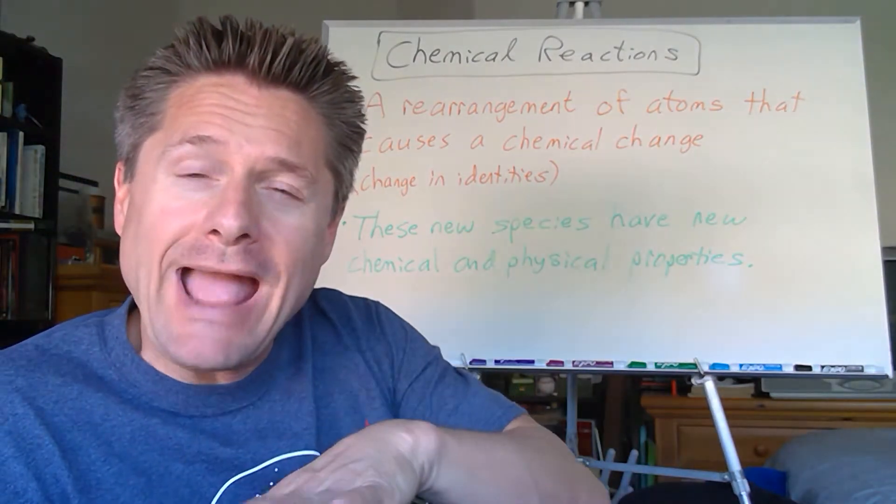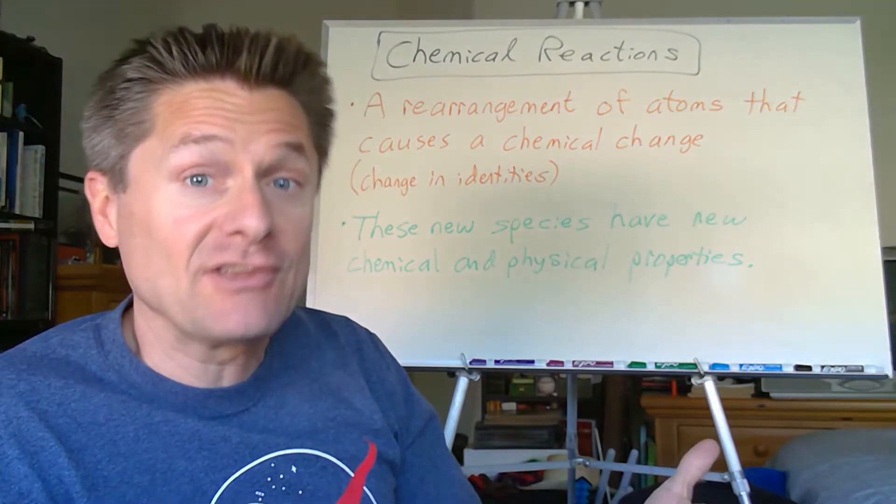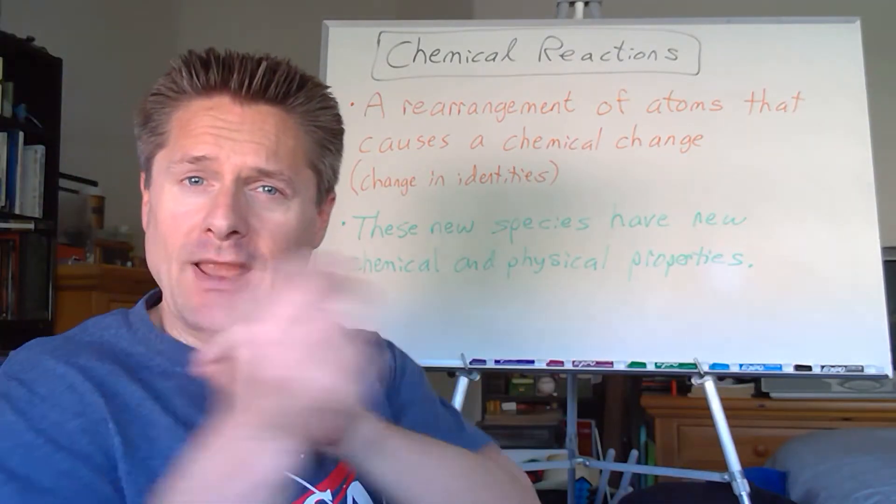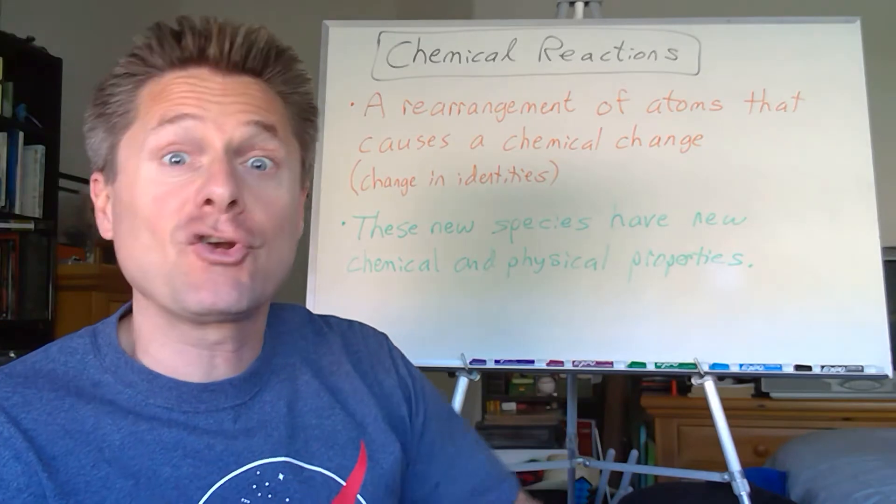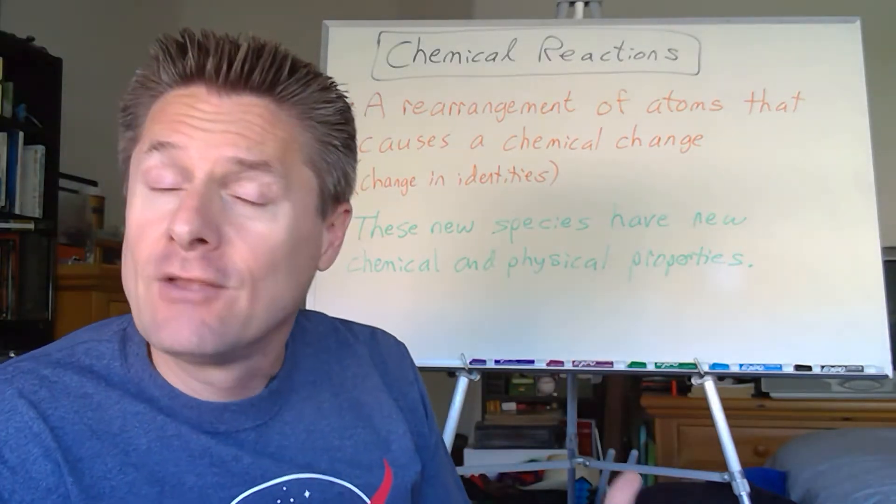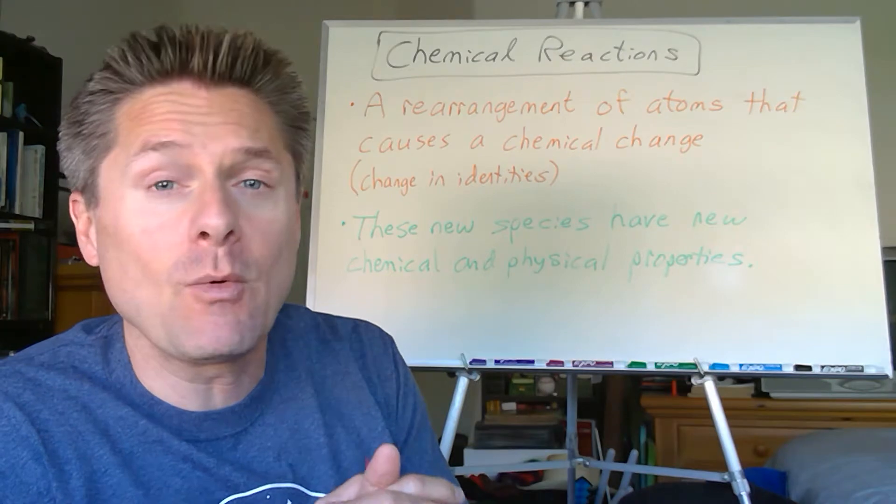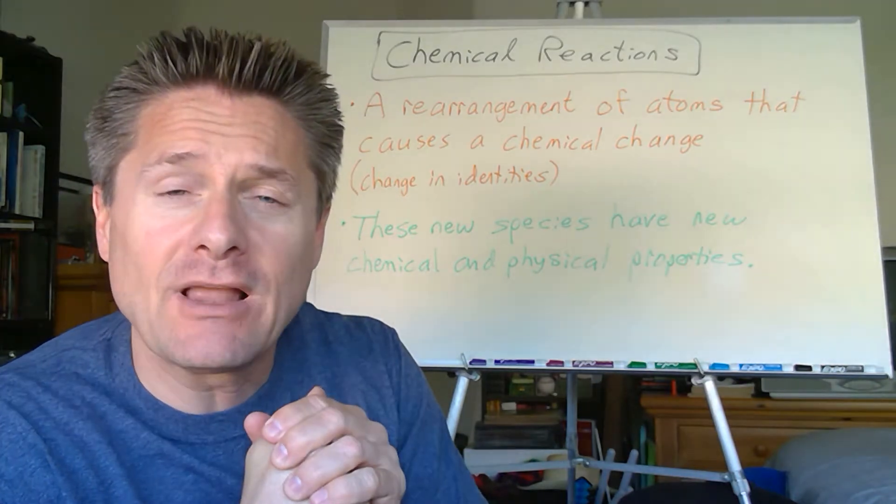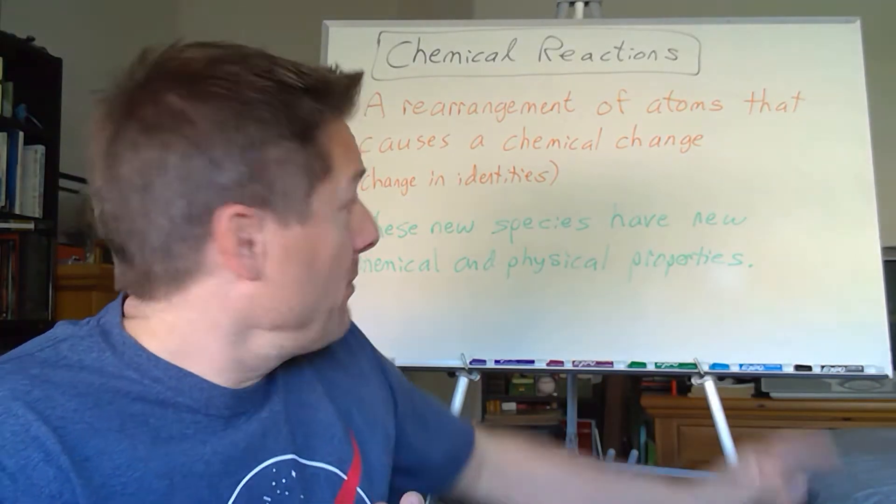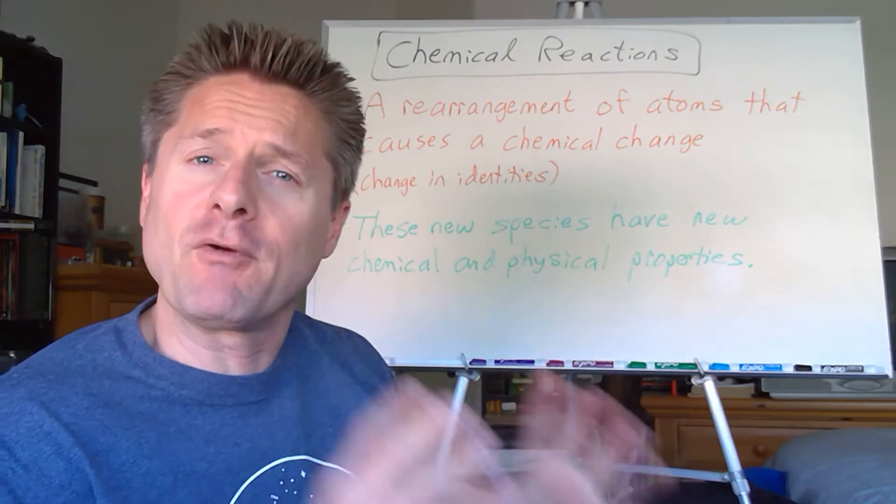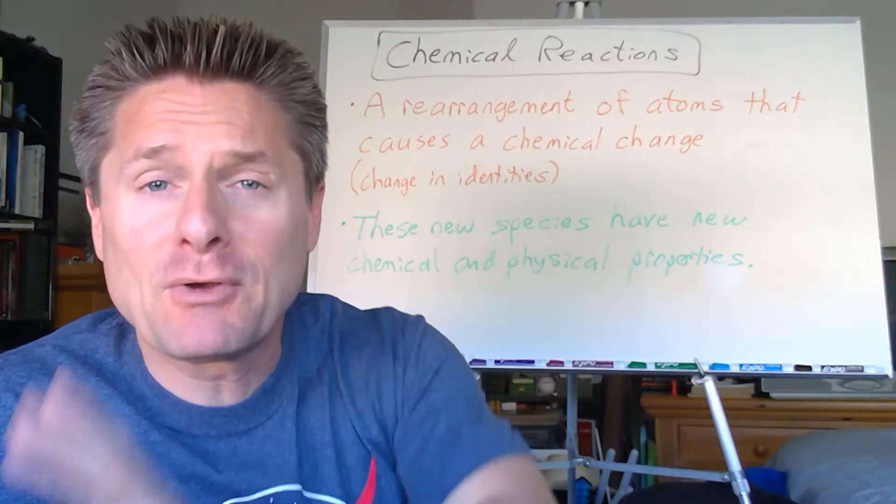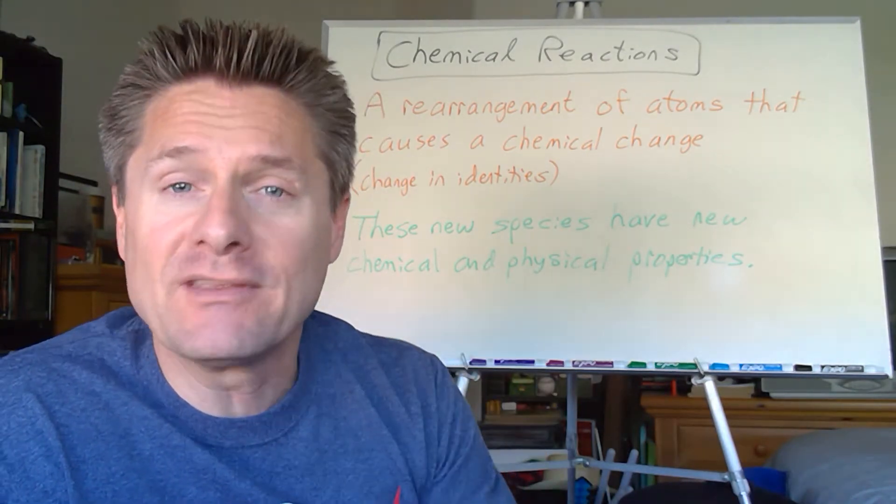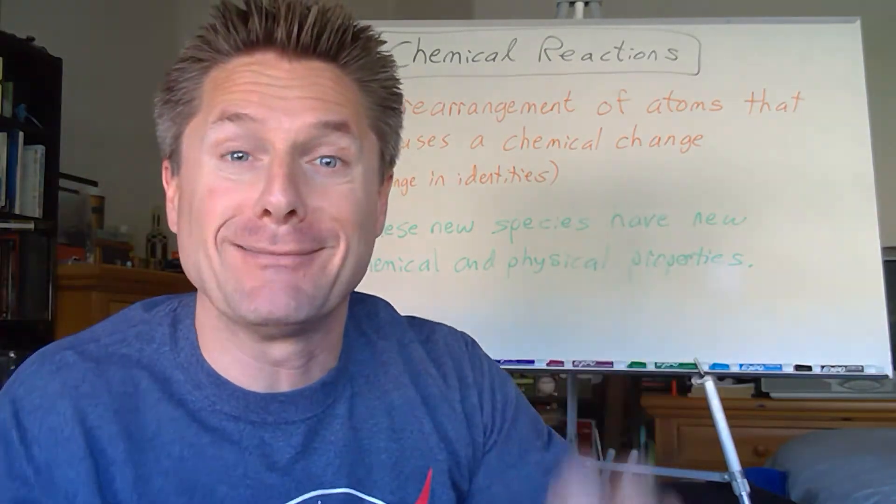Now remember, a chemical reaction is just a fancy name for a chemical change that's going on. And what we learned before, that's due to a rearrangement of atoms. So we've got this rearrangement of atoms, the proportions of those atoms change, creates new species. So we're going to learn in this chapter how to represent that with chemical equations in a little bit.